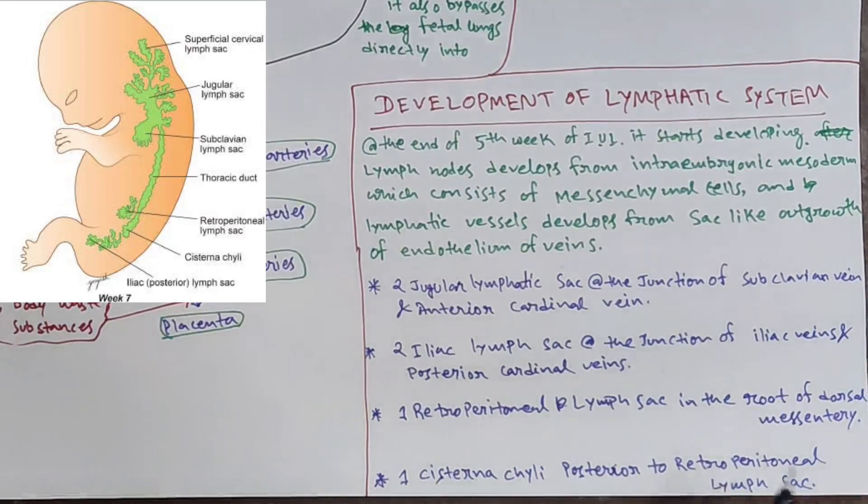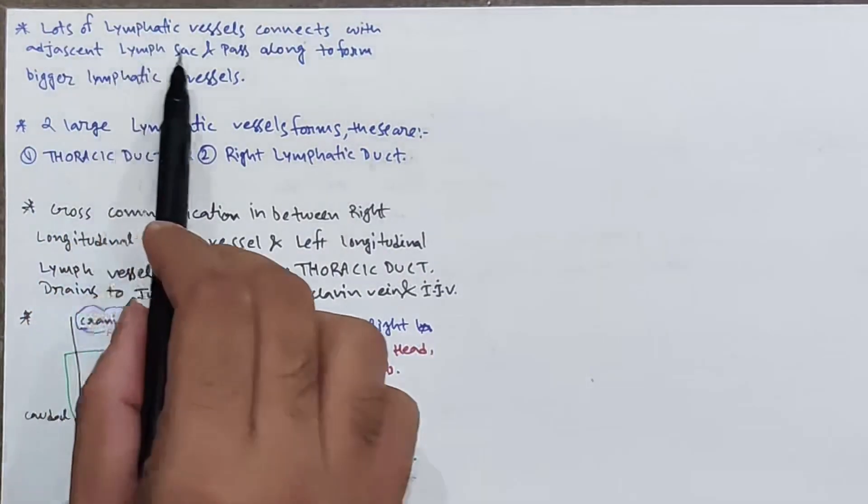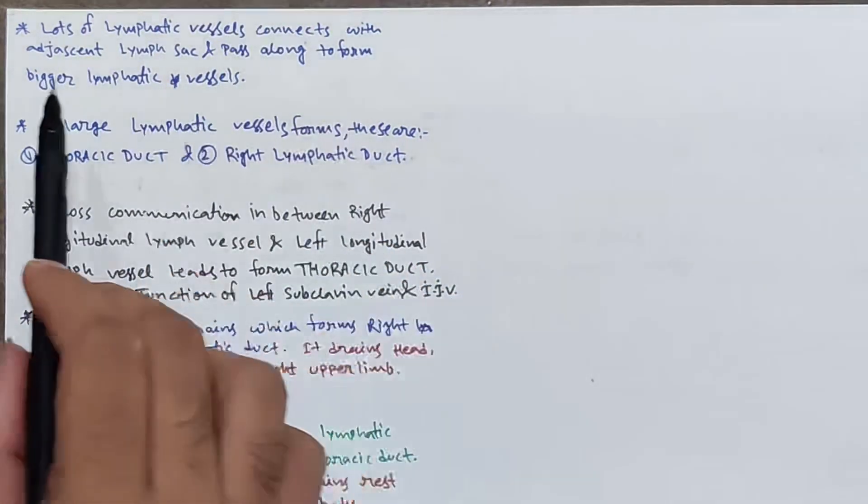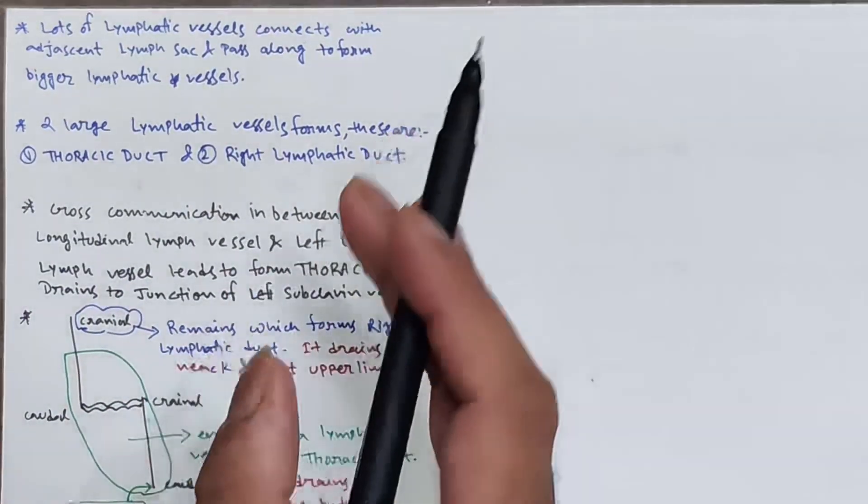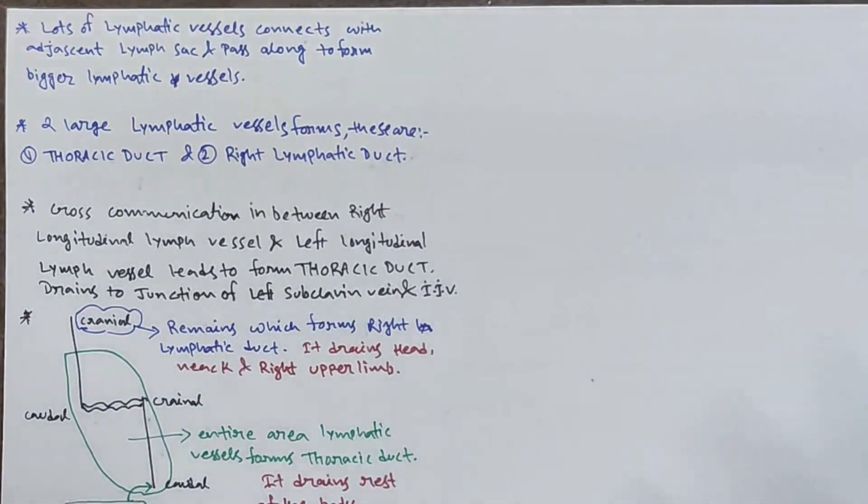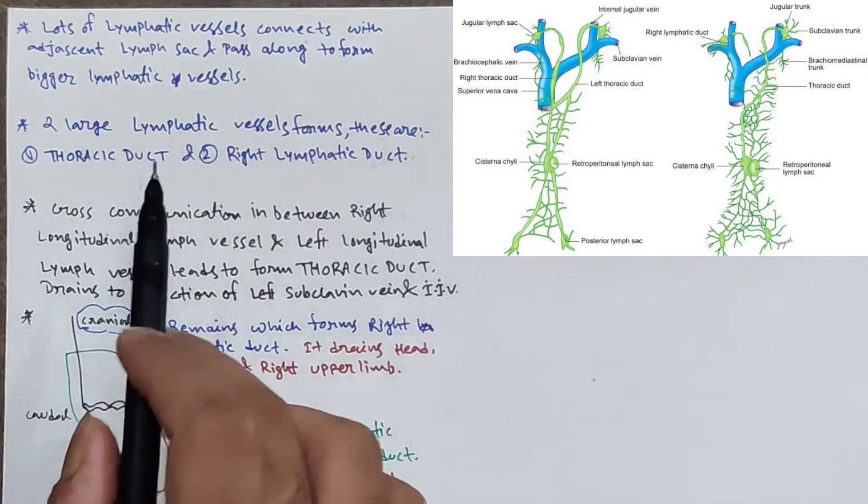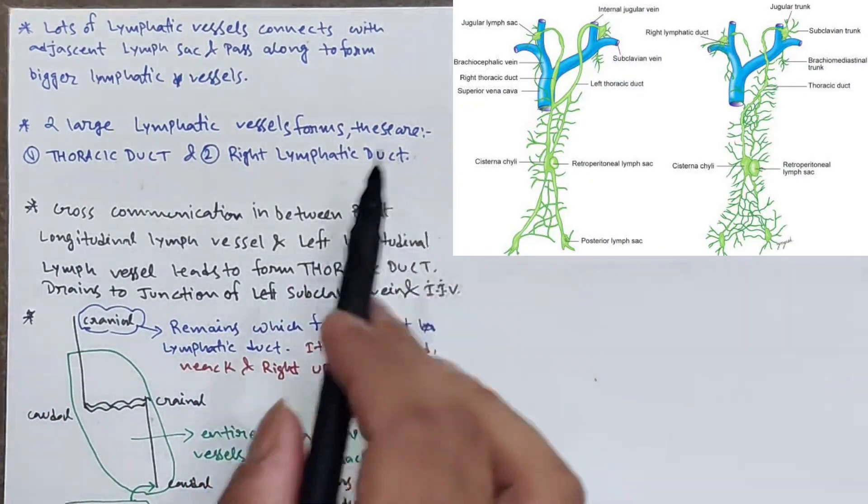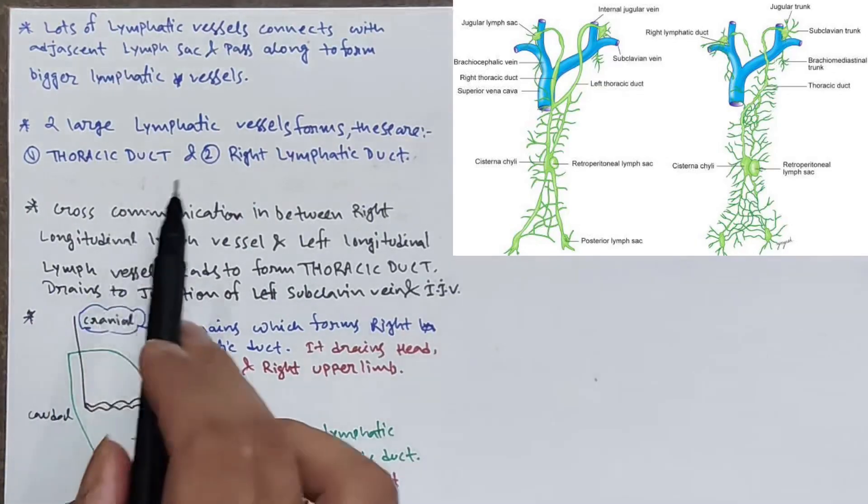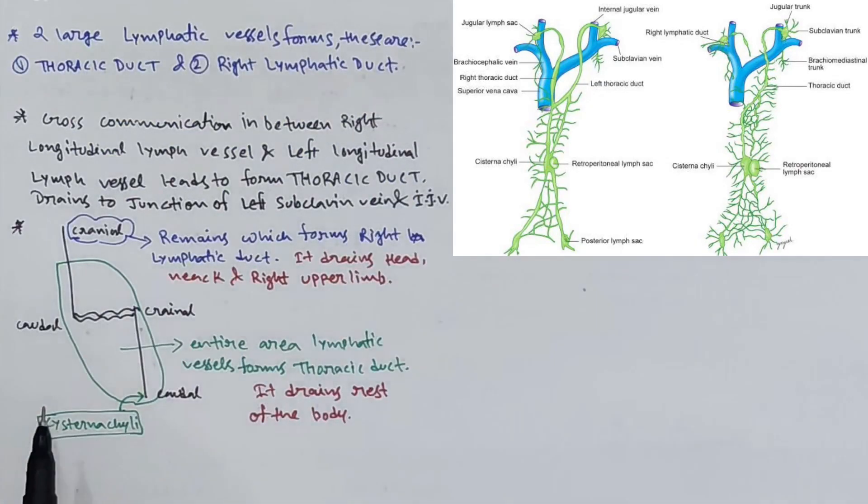Lots of lymphatic vessels connect with the adjacent lymphatic sac and pass along to form bigger lymphatic vessels. Two large lymphatic vessels form: the thoracic duct and right lymphatic duct.